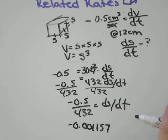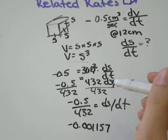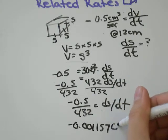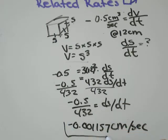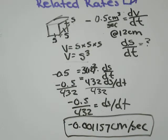And let's think about our units. ds is the length of a side, so that would be measured in centimeters, and dt is the unit of time. In this example, it was measured in seconds. So our answer would be the rate of change of a side when h equals 12 is negative 0.001157 centimeters per second.